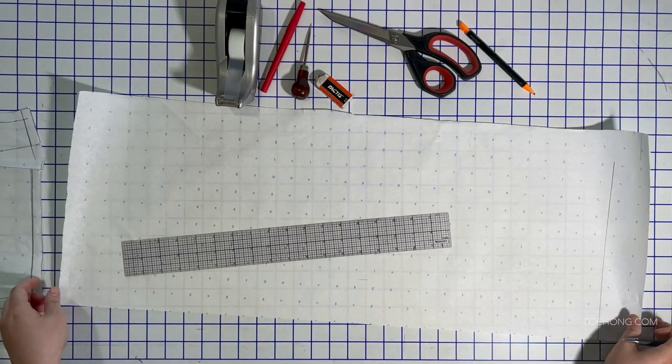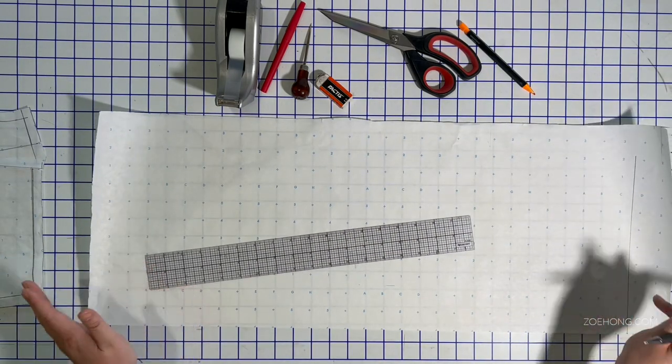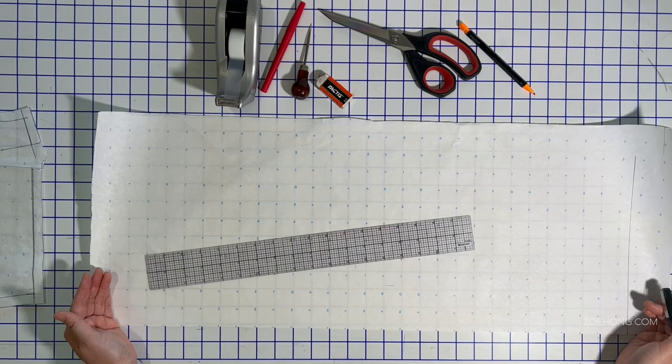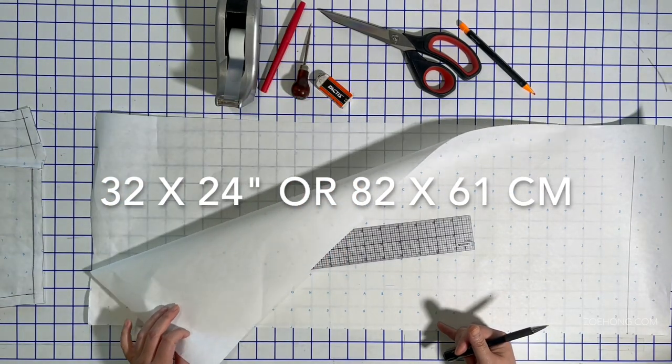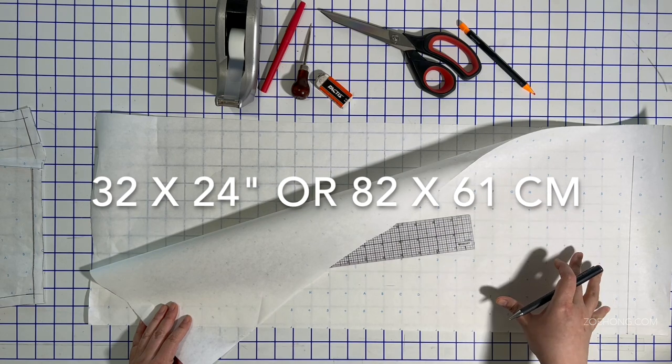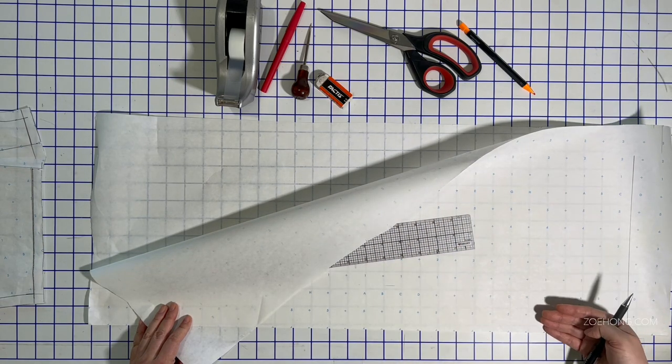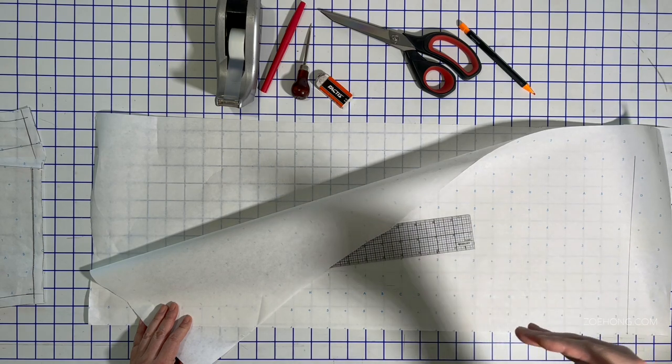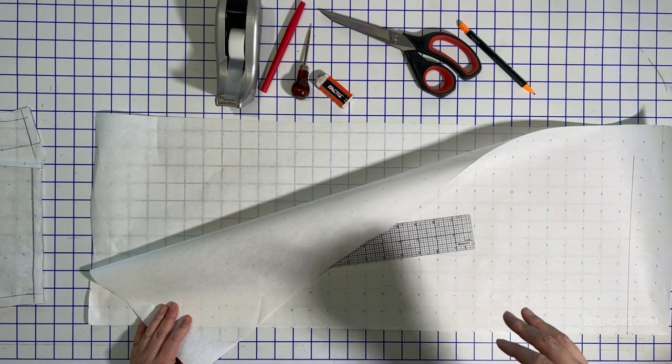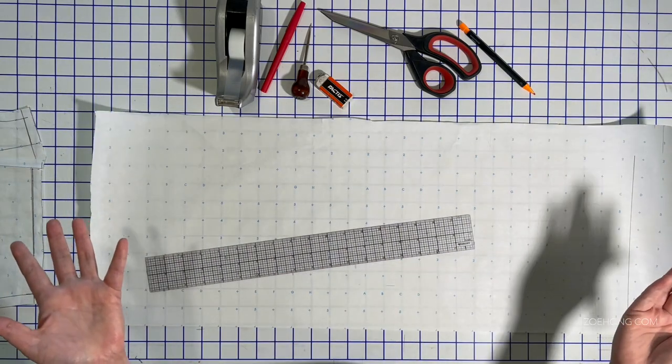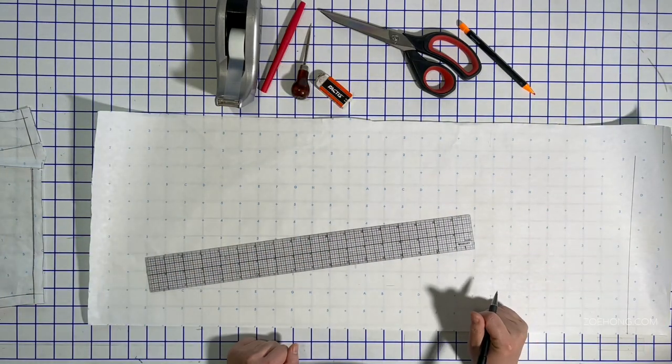All right. First thing you want to do is cut yourself a piece of paper. This is 32 by 24 inches and then fold it in half. We're going to draft the full pattern on one side because it's mostly symmetrical, the pattern. And then we're going to open it up and make adjustments to the front and back of the sleeve.